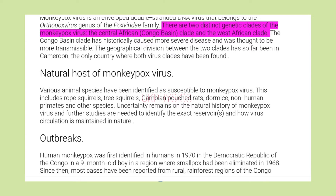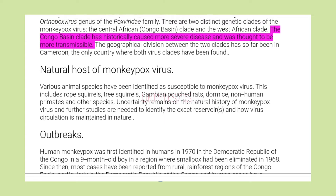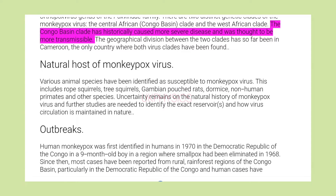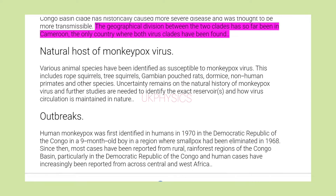There are two distinct genetic clades of the monkeypox virus: the Central African (Congo Basin) clade and the West African clade. The Congo Basin clade has historically caused more severe disease and was thought to be more transmissible. The geographical division between the two clades has so far been in Cameroon, the only country where both virus clades have been found.